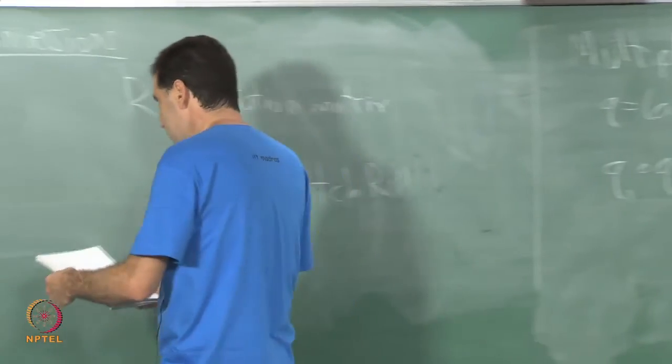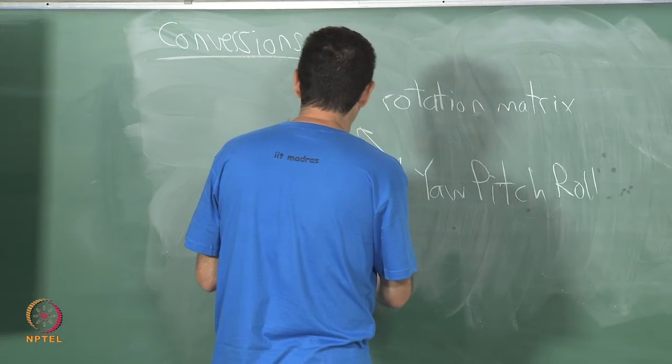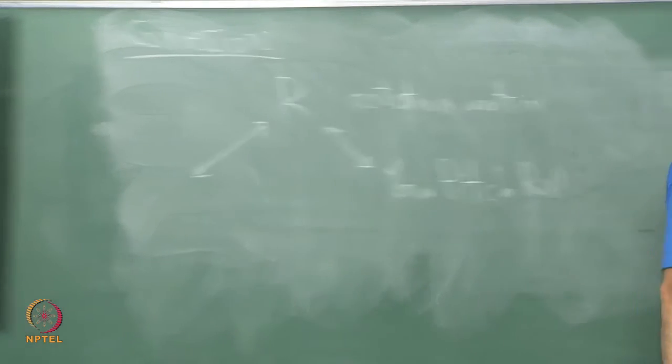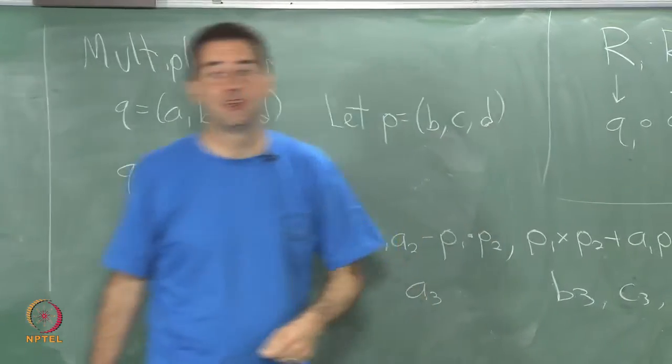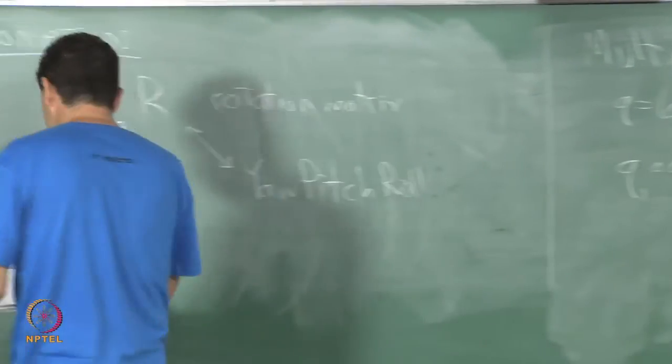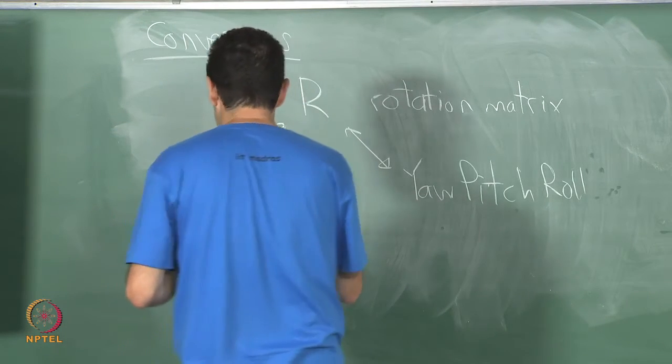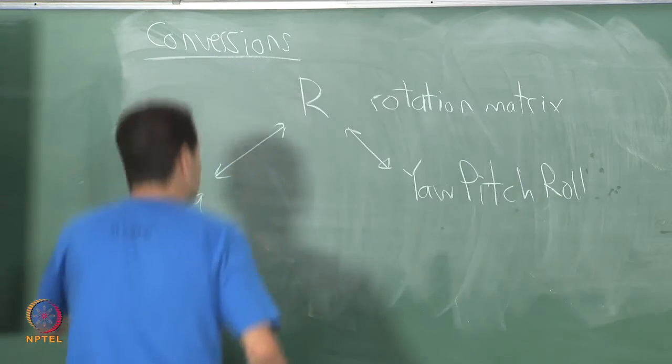Then we went down the path of axis angle representations. I mentioned over here you can convert back and forth between quaternions and rotation matrices. We can get to quaternions using this Q representation, unit quaternions.